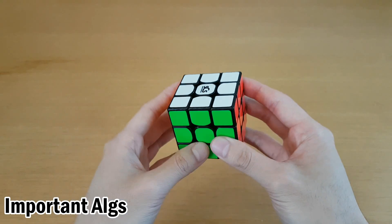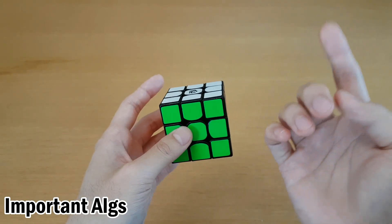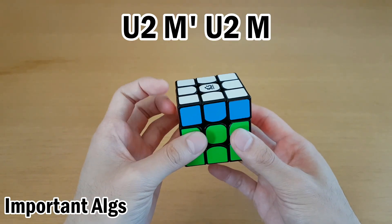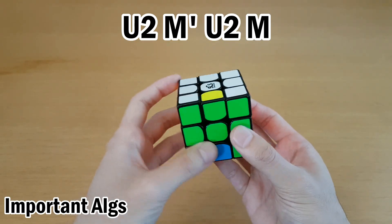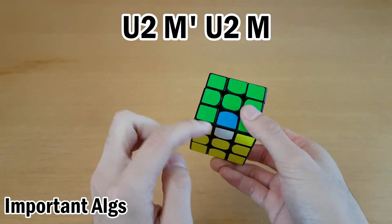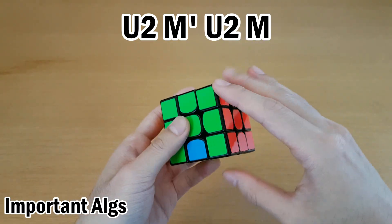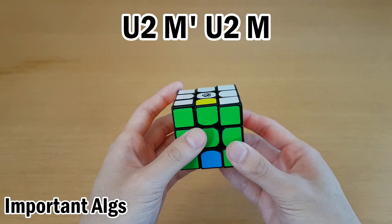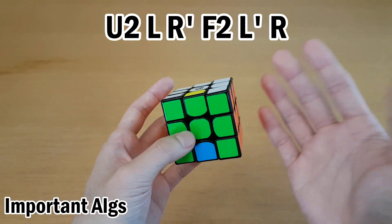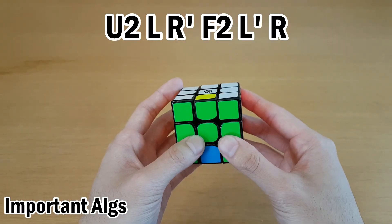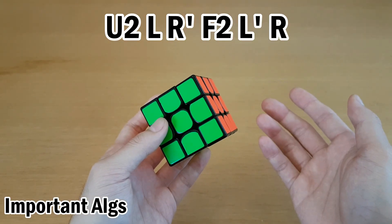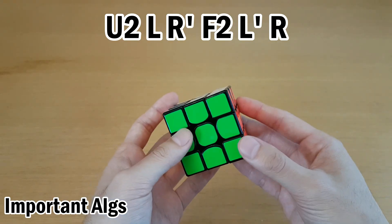And now some algorithms that are very important to know for insertions. I talked about in this video that I inserted U2 M' U2 M, or some mirror or inverse of it to cycle three edges. Since in fewest moves, you have to write outer turns instead of M turns. This goes from four moves to six moves, but it's still better than a three edge commutator, which is 10 moves. So often in your skeleton, you won't get exactly that case, but you can get close to it and set up to it.